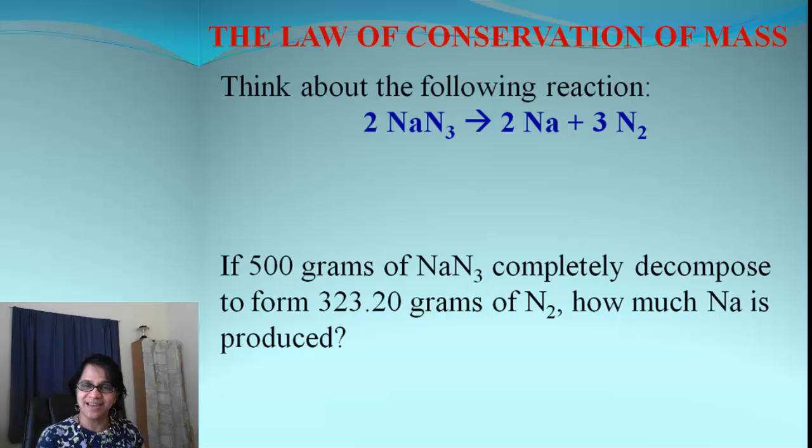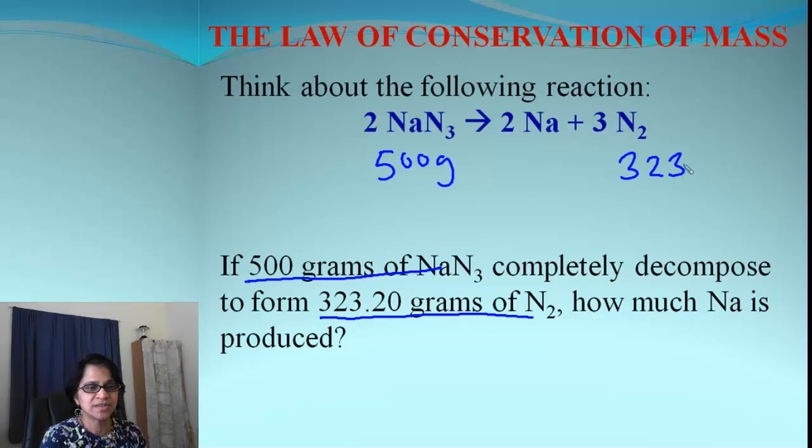How do we use this in chemical reaction? Here is an example of a reaction and we have been given the masses of two reactant and product, two compounds. The given is 500 grams for NaN3 and nitrogen is 323.20 grams.